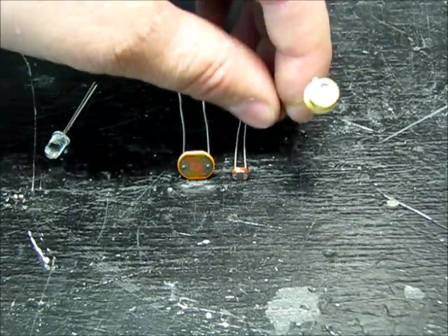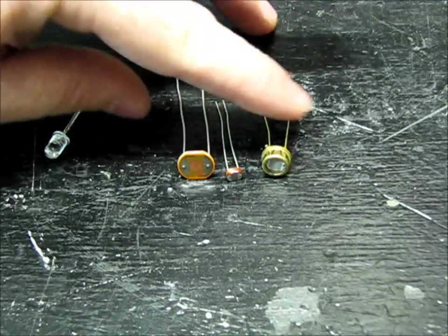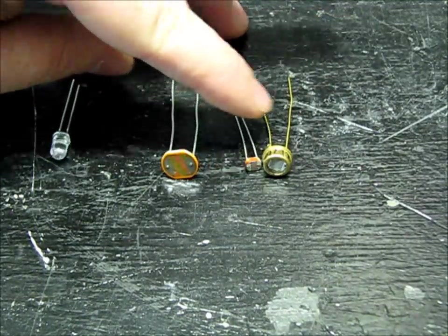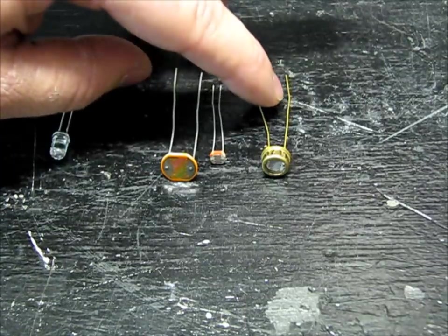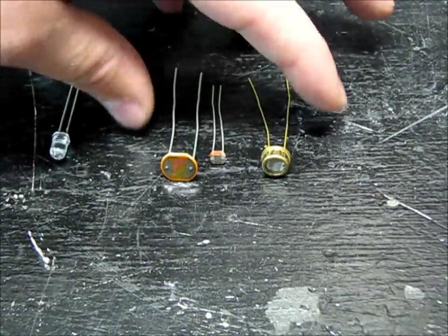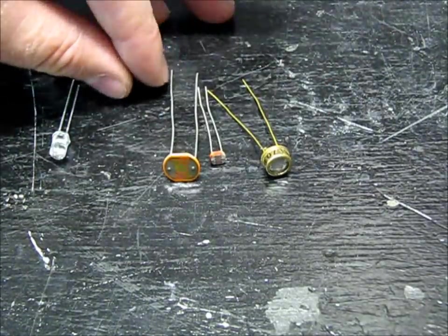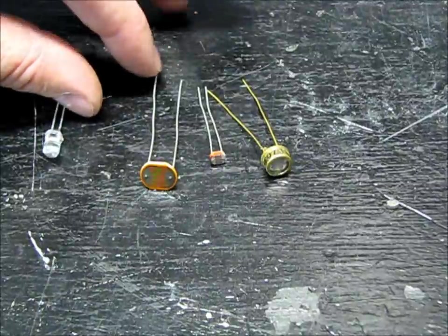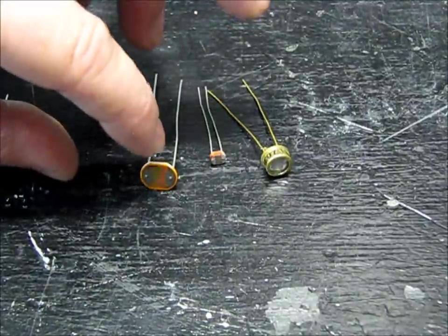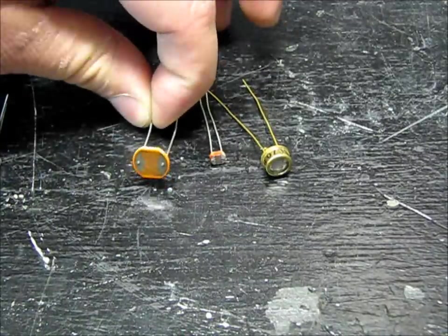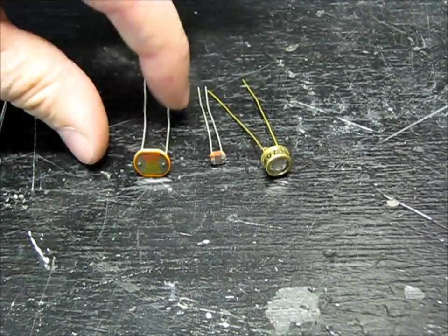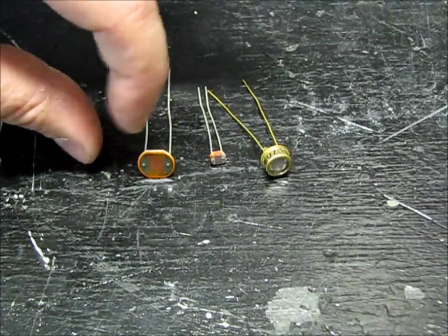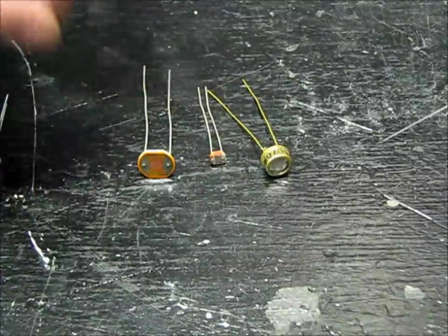That's basically what a photocell does. These three are photoresistors, or light-dependent resistors, or LDRs. You run electrical current through this cell, and as you show it more or less light, it resists or allows more electricity to go through.